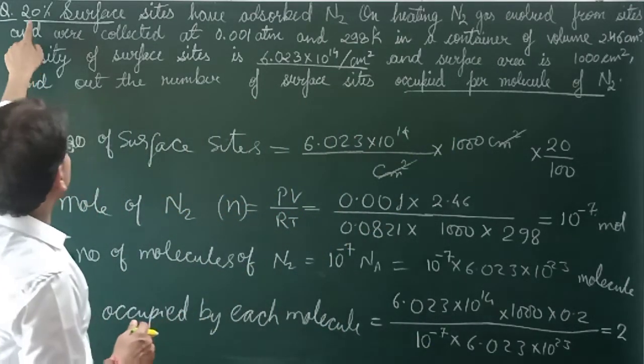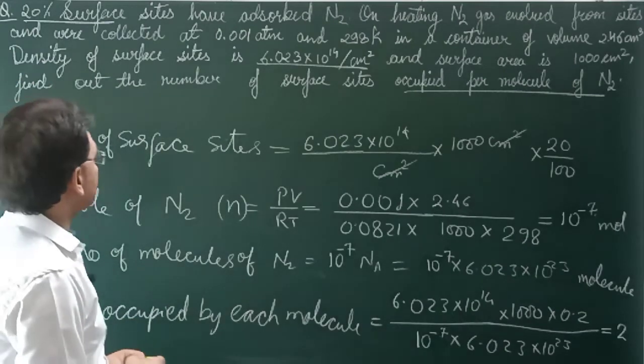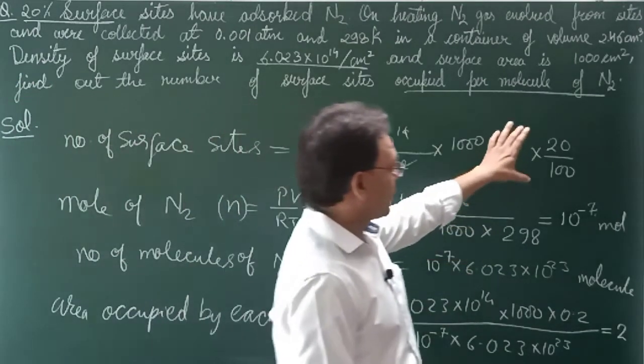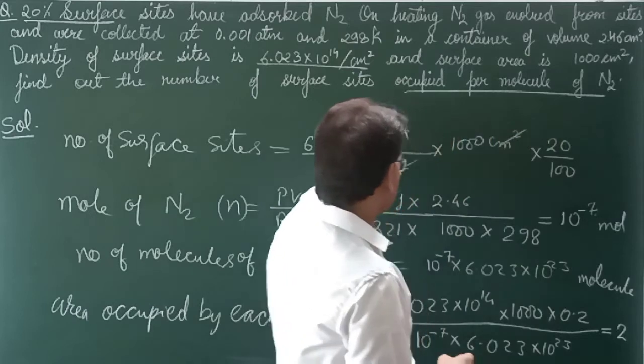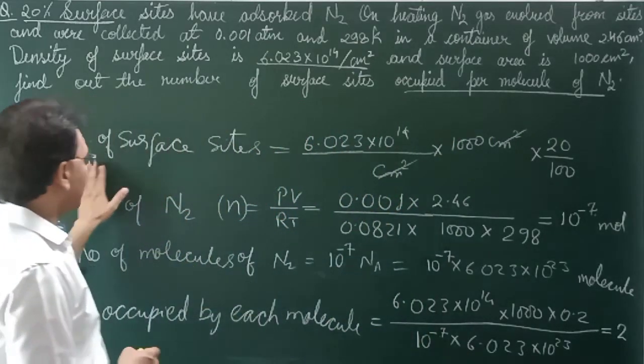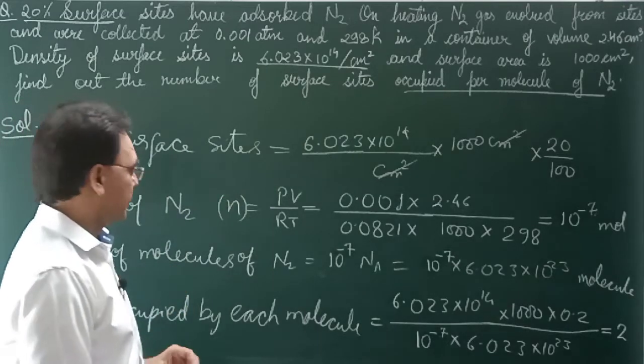But the question says only what percent is occupied? 20% sites are occupied. So multiply by 20%. This gives us the actual surface area occupied. This is written here - I've written number of surface sites occupied.